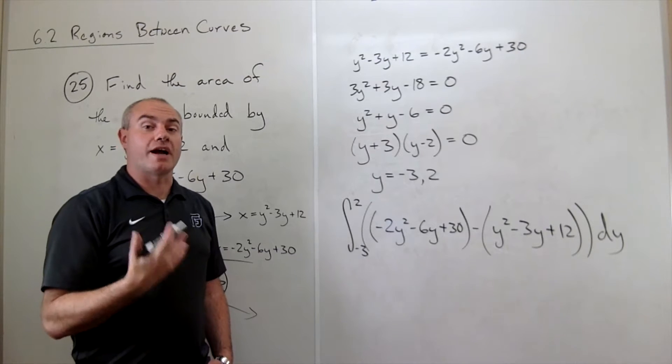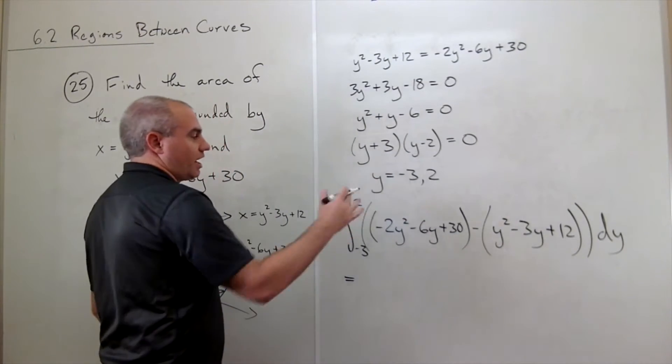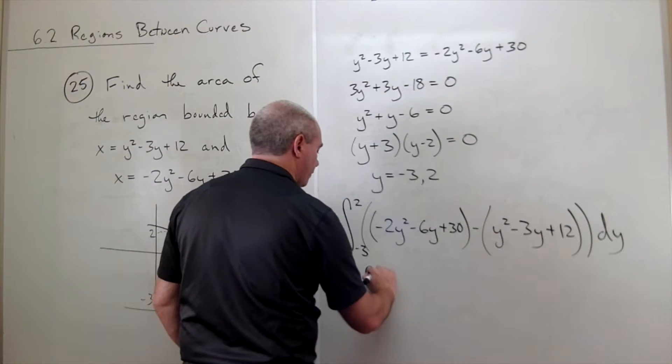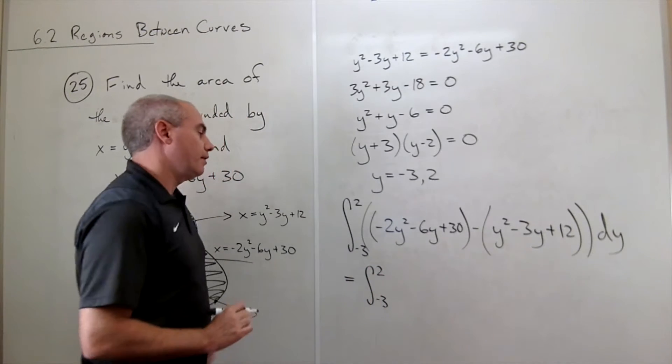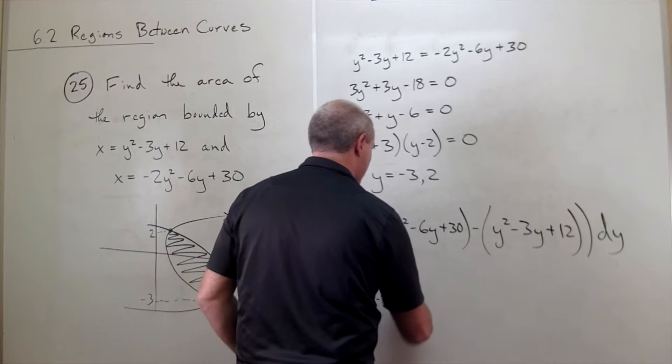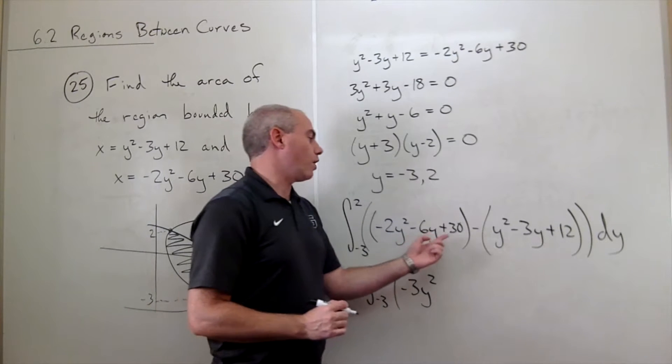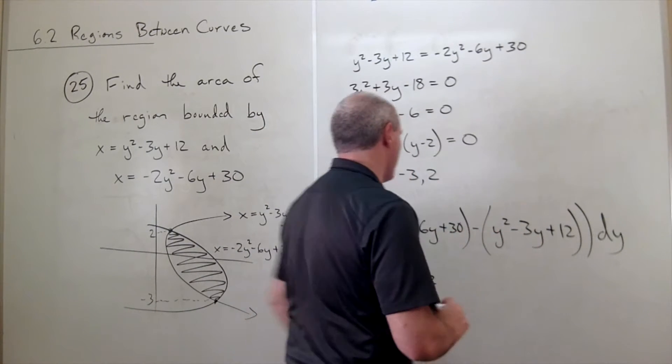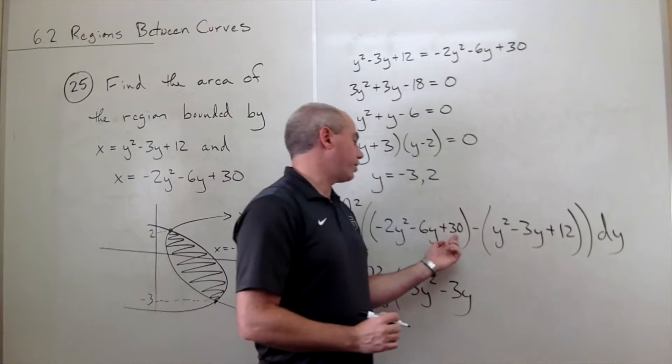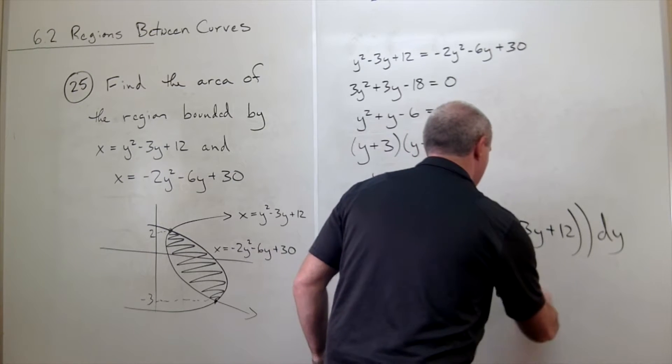Before actually taking an antiderivative, we can combine this stuff and make it a little bit more simple. We've got integral from negative 3 to 2. We've got a minus 2y squared minus y squared, which is minus 3y squared. We've got a minus 6y plus 3y, which is a minus 3y, and then finally we have a 30 minus 12, which is positive 18 dy.